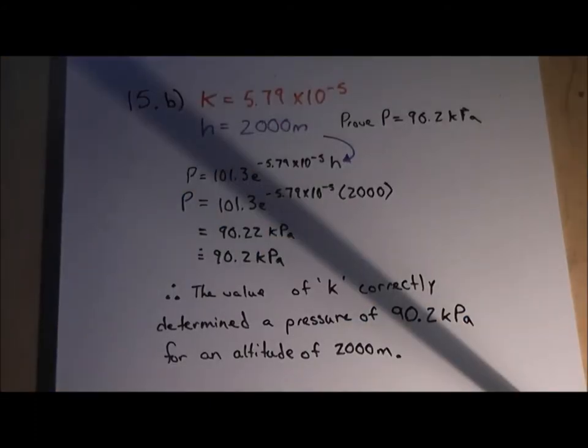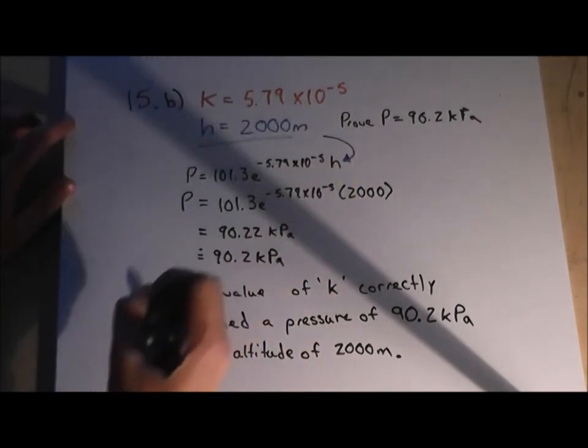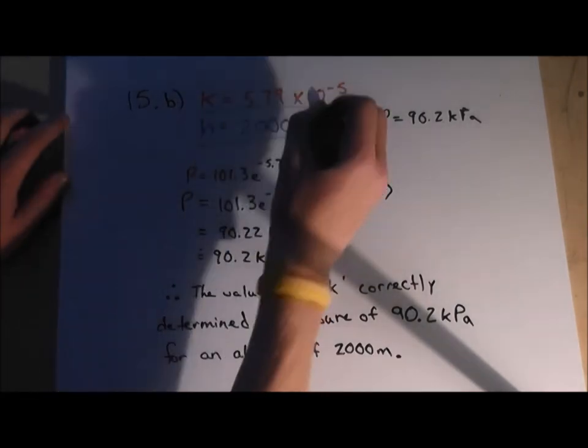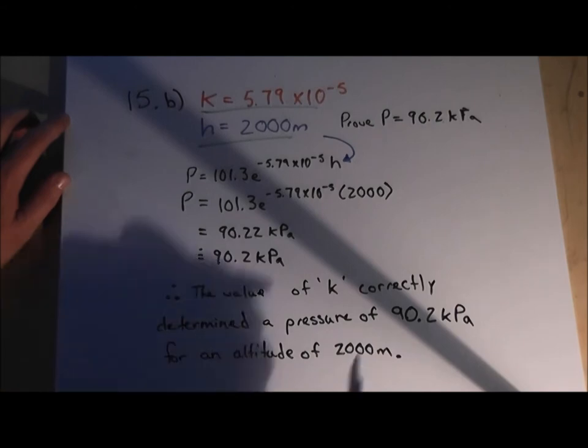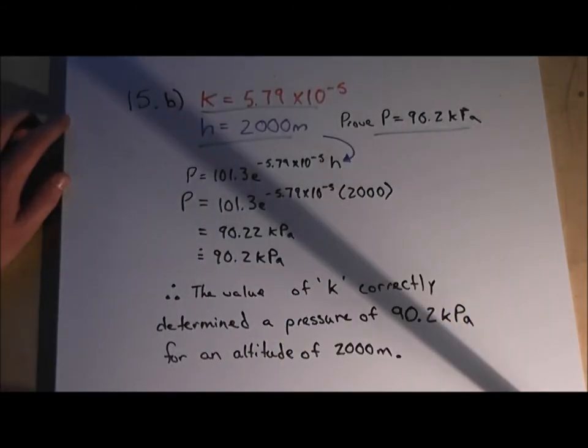In question 15b, we're simply being asked to prove that the value of k that we determined in 15a gets us a pressure of 90.2 kilopascals at a height of 2,000 meters. So simply, we're just substituting in values for their variables and getting an answer. So here is the given in our question. Here's our value of k that we determined. And we're being asked to prove the pressure of 90.2 kilopascals.